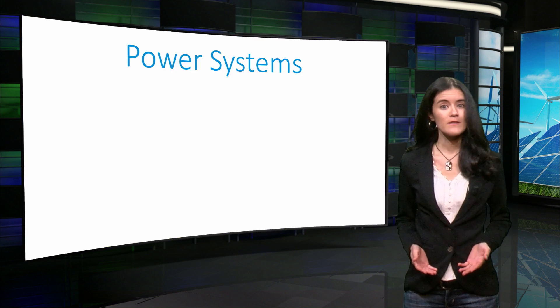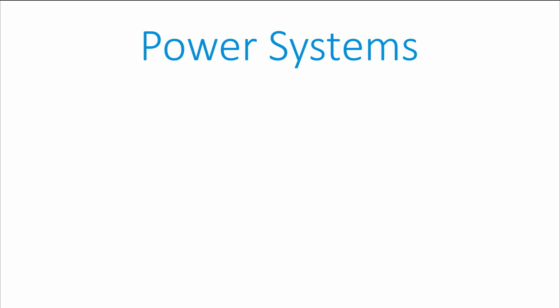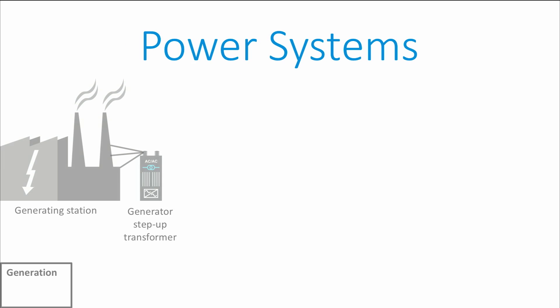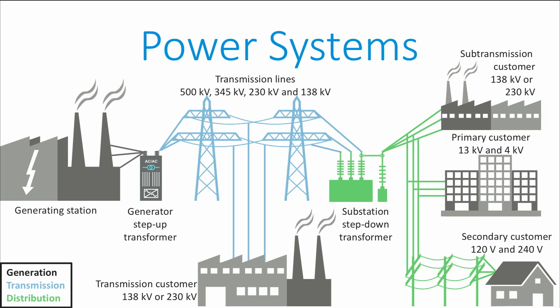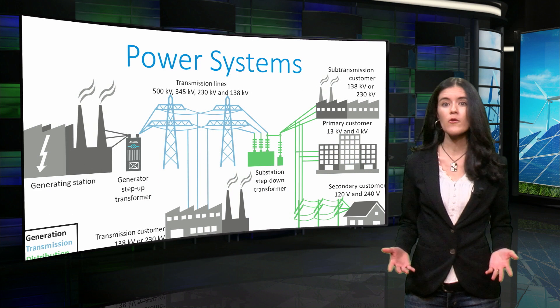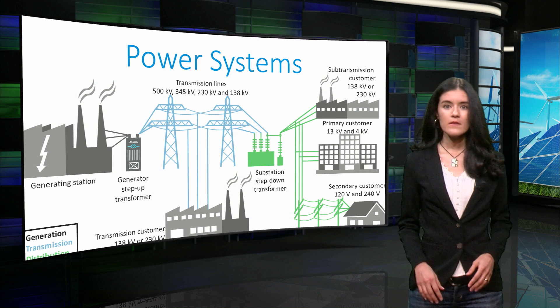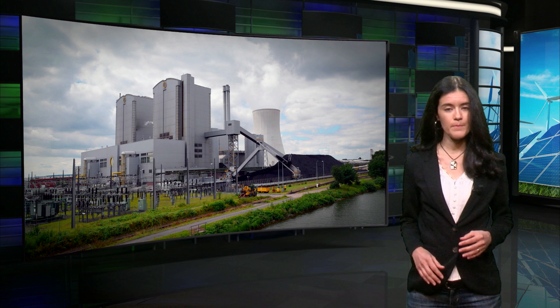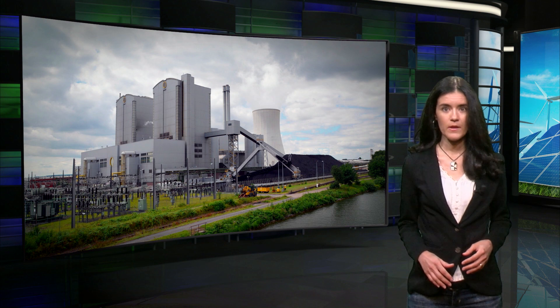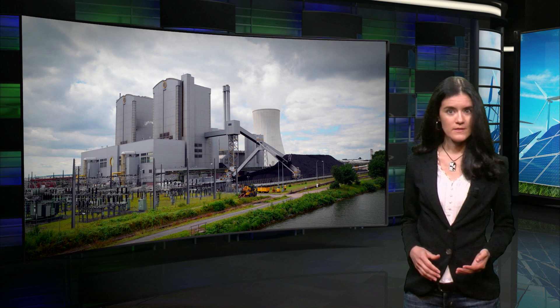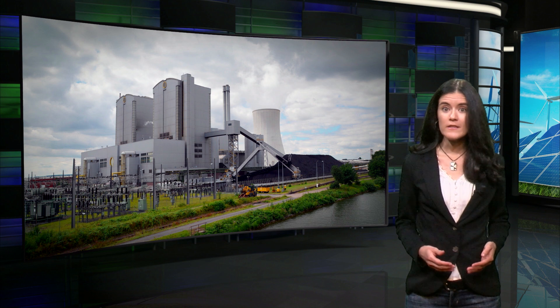A traditional power system consists of three main systems – the generation, the transmission, and the distribution system. We call it traditional because the generation of electricity is centralized, meaning that only a few large power plants are involved. The generation system comprises the power plants that supply power to the system, also called generation stations or generation units.